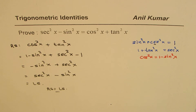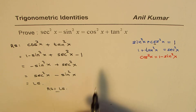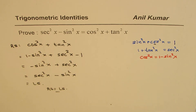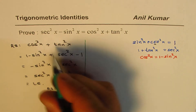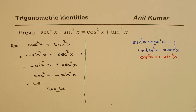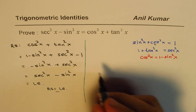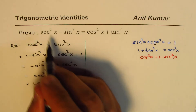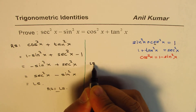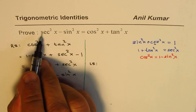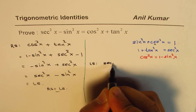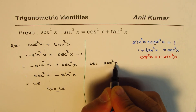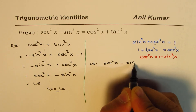Now, you could do the same question starting with the left side. Let's do it. The left side for us is secant square x — let me rewrite — secant square x minus sine square x.